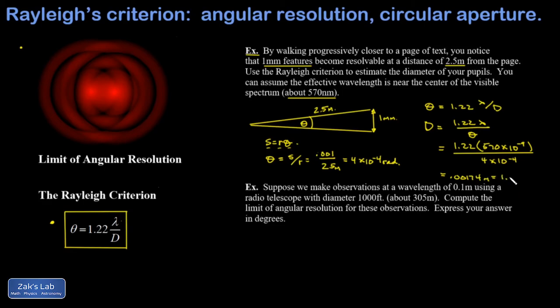In the next example, we're looking at a radio telescope. We're told we're making observations at a wavelength of 0.1 meters, or 10 centimeter radio waves, using a radio telescope with diameter 1000 feet—that's the Arecibo telescope—and in SI units that's 305 meters.